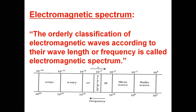The electromagnetic spectrum is the orderly classification of electromagnetic waves according to their wavelengths or frequencies. It is like a band varying in terms of wavelength from 10⁻¹⁴ to 10⁴. As the wavelength increases from 10⁻¹⁴ to 10⁴, its frequency decreases from 10²² to 10⁴. Now let us study each type.